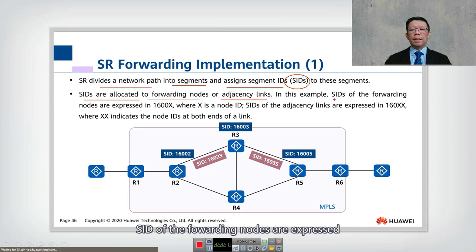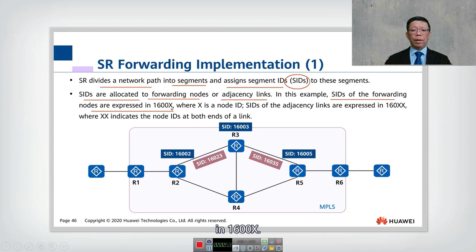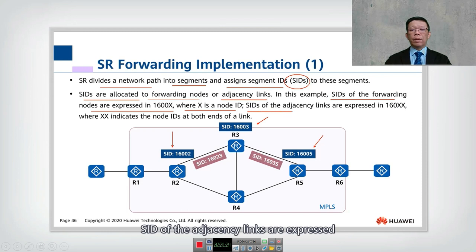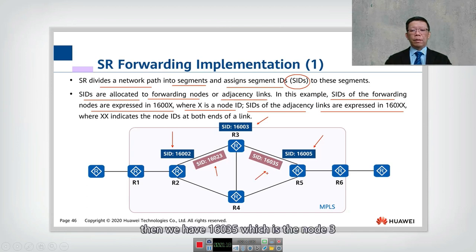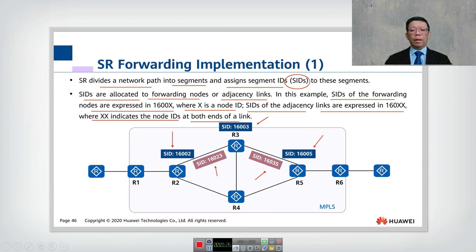In this example, SIDs of the forwarding nodes are expressed as 16000X, where X is the node ID. You can see the SIDs on router 2, router 3, and router 5. SIDs of the adjacency link are expressed as 10160XX. For example, SID 16023 means XX is 2 and 3, and SID 16035 refers to node 3 and node 5, where XX indicates the node IDs on both ends.